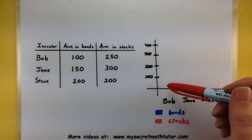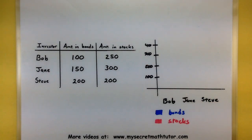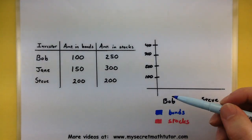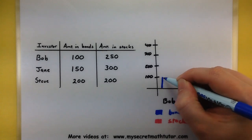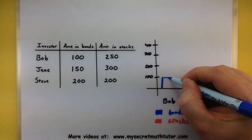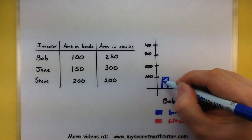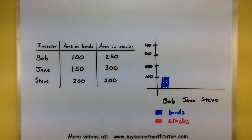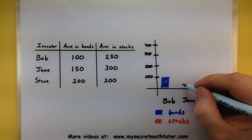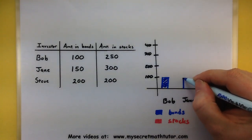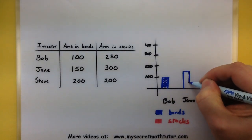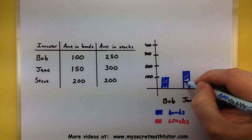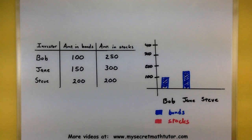Now we can create a bar for how much each investor has in bonds and stocks so we can visually see what they have. Starting with Bob, he has $100 in bonds, so we'll make a small bar going up to the $100 mark. For Jane, she has even more in bonds — a larger bar going halfway between $100 and $200. Quickly I can see that Jane has definitely invested more into bonds. And for Steve, his bonds go all the way up to $200.